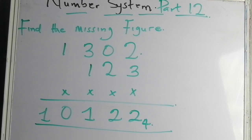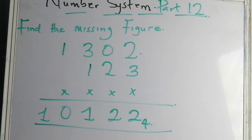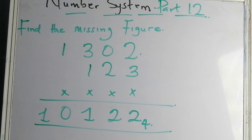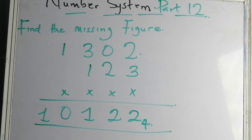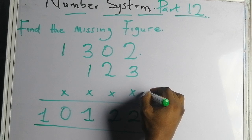Good morning ladies and gentlemen. This is Number System Part 4. The question says you should find the missing figure. To find that missing figure, you need to add and subtract. The addition of 1302 and 123, plus the missing figure, gives the answer. So to get the missing figure, you need to add 1302 and 123, then subtract from 10122 in base four.